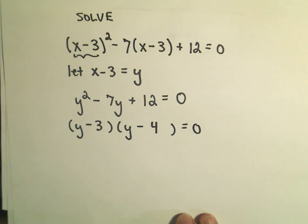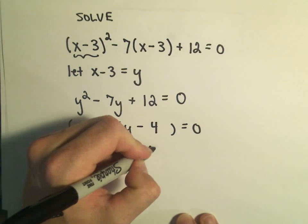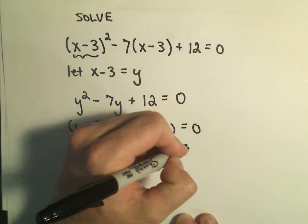So we'll simply set that equal to 0, and then we set both parts to 0. So y minus 3 equals 0, and y minus 4 equals 0.